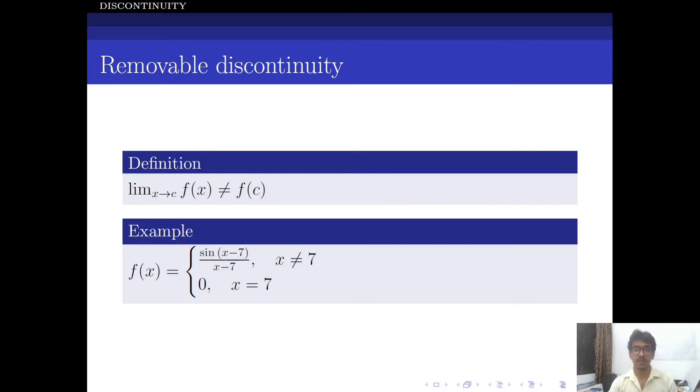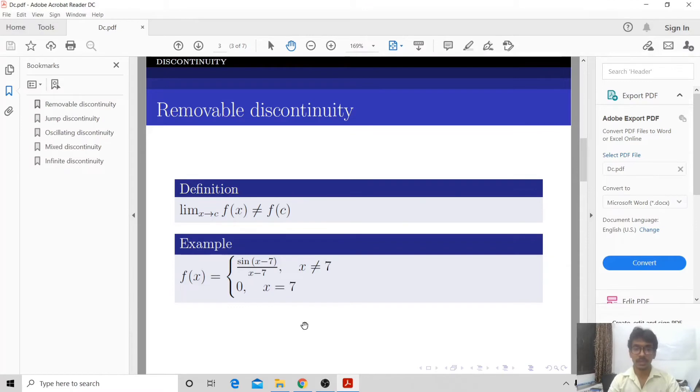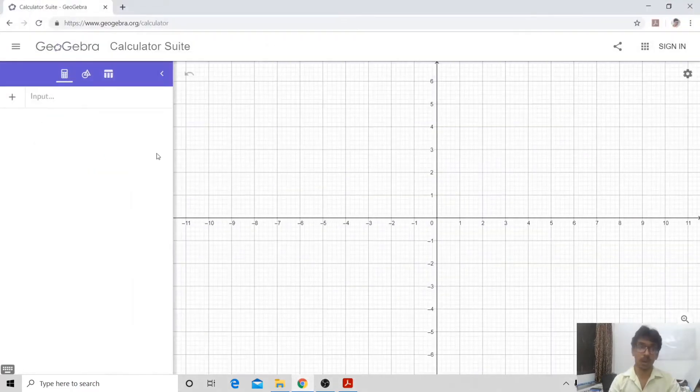Here an example is given. f(x) is defined in the form of sin(x-7)/(x-7) and this is 0 when x is 7, and sin(x-7)/(x-7) is true when x not equals 7. Let us try and plot this function and see what happens.